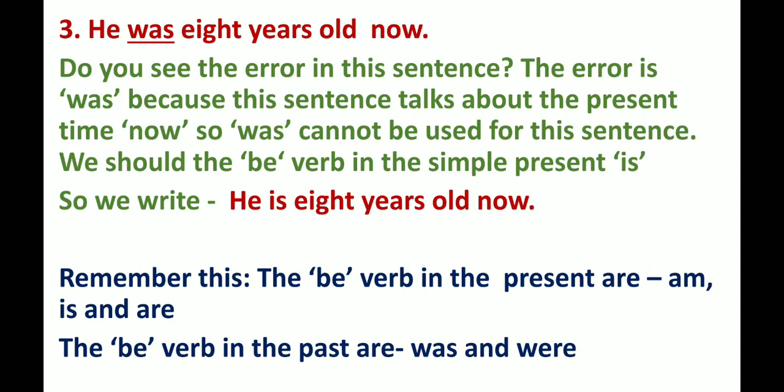Remember this: the b-verbs in the present are am, is, and are. The b-verbs in the past are was and were.